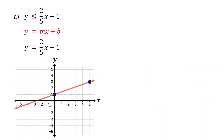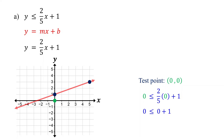The next step is to shade the solution region. To do that, first pick a test point that is not on the line. A great choice is the origin since it is easy to work with. Then substitute its coordinates into the inequality and simplify. Two-fifths times 0 is 0, and 0 plus 1 is 1. Since this is a true statement, the test point satisfies the inequality. That means our test point is part of the solution region.